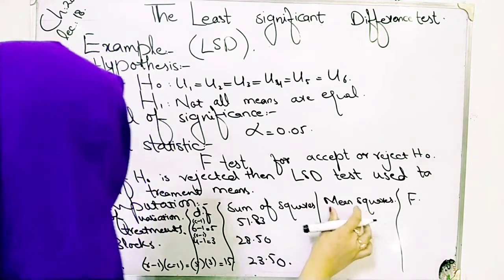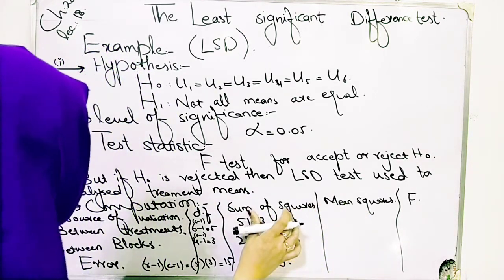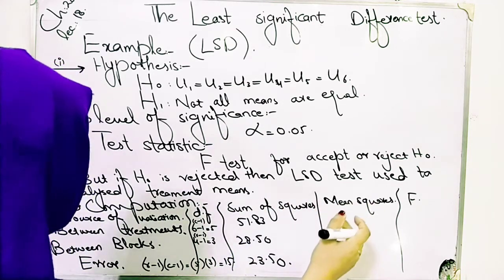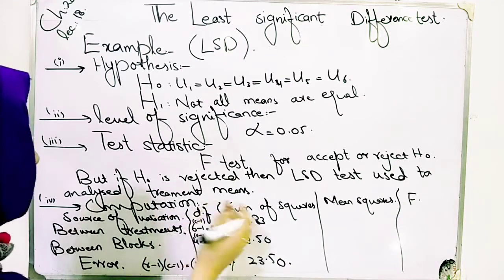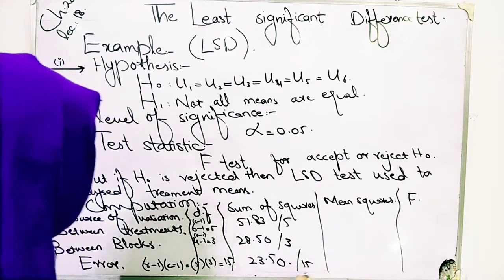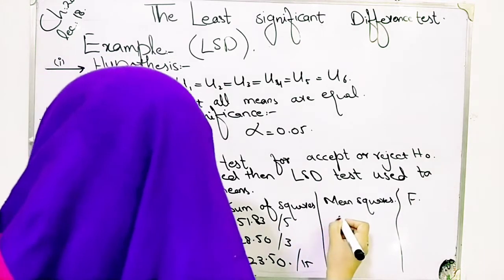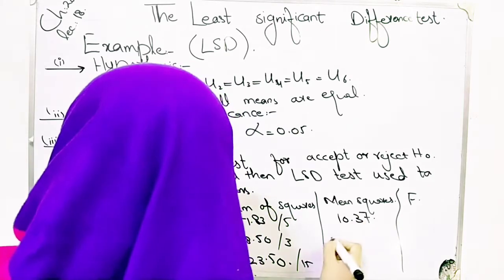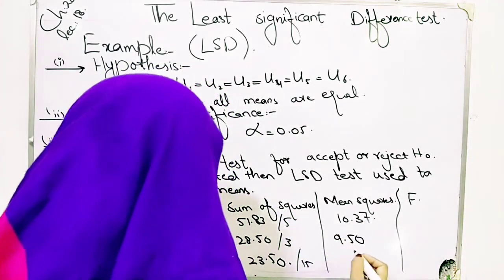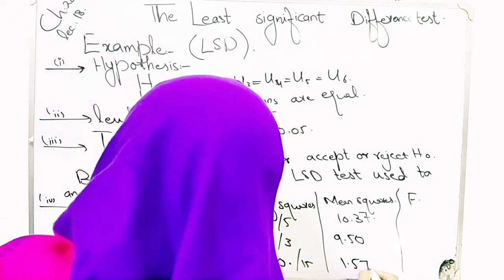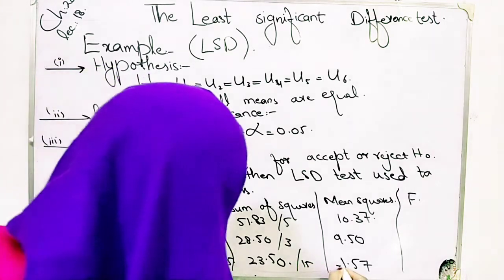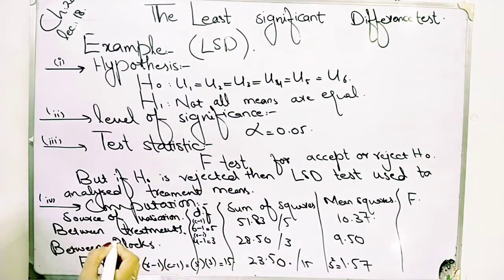The mean square is the sum of squares divided by the degree of freedom. For treatments: divide by 5. For blocks: divide by 3. For error: divide by 15. The mean square for treatments will be 10.37. I have already calculated — you have to do your own calculation and tell me in comments whether the calculation is correct. The error term mean square is 1.57, which is the mean square error.